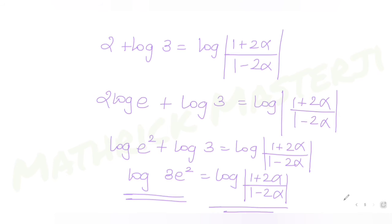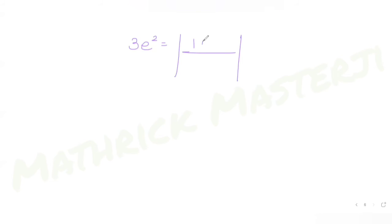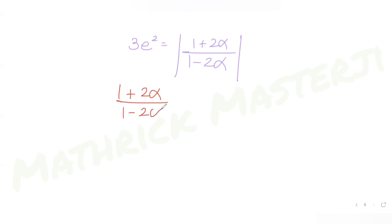Since log a = log b implies a = b, we can remove the logs. Removing the absolute value gives |(1 + 2α)/(1 - 2α)| = 3e², so (1 + 2α)/(1 - 2α) = ±3e².